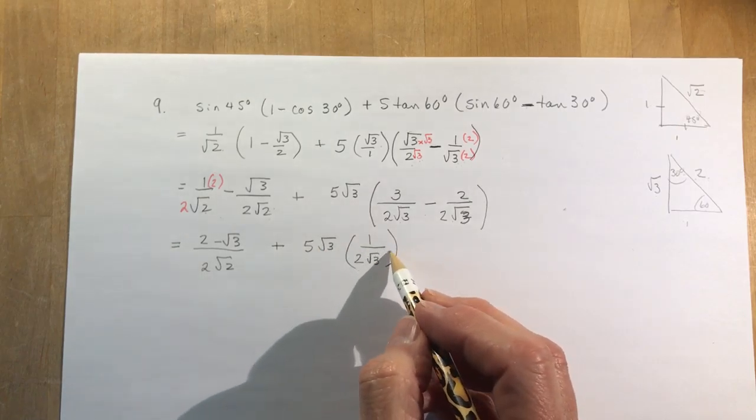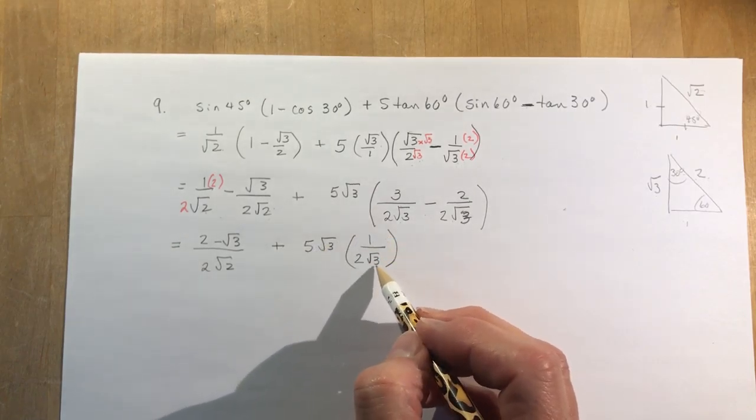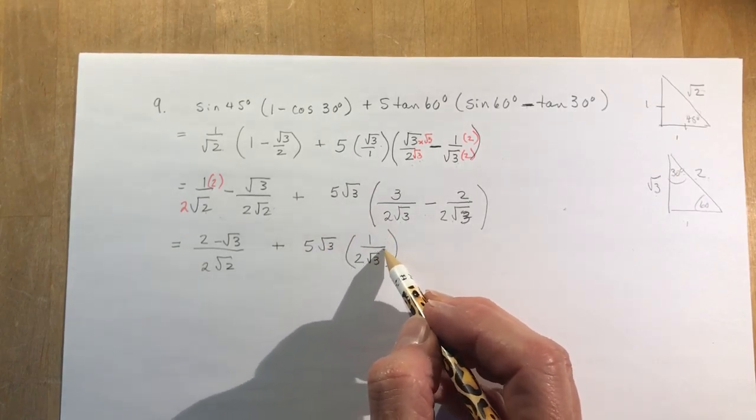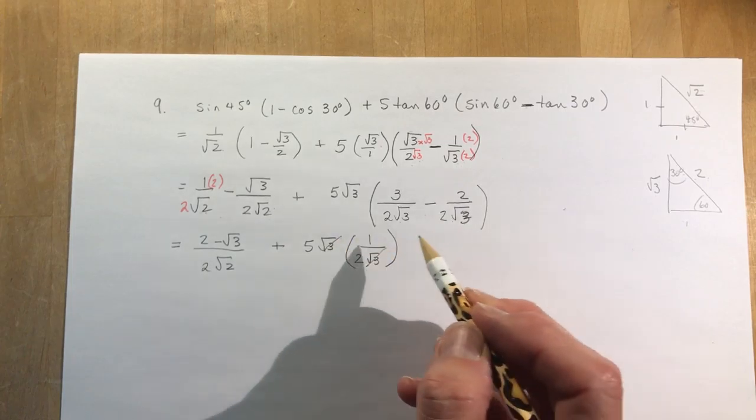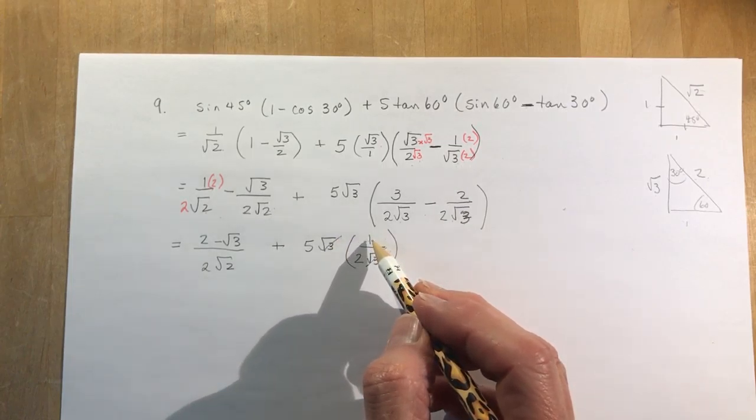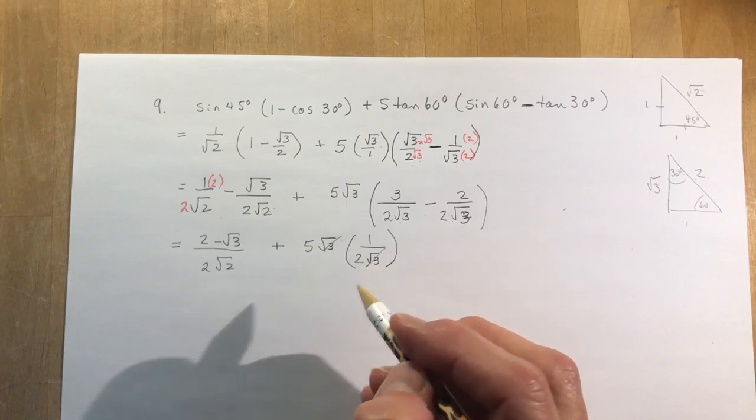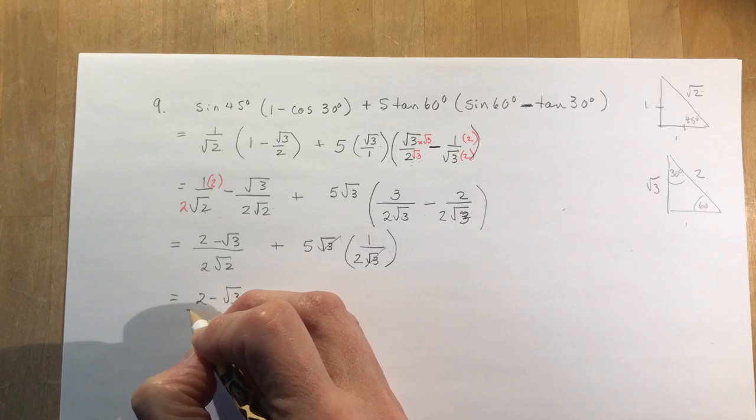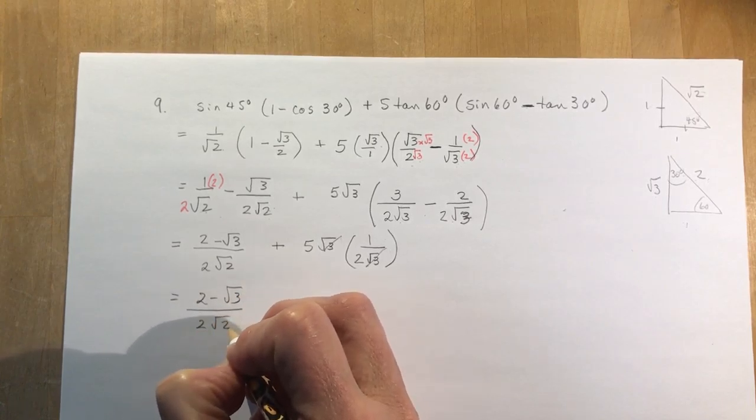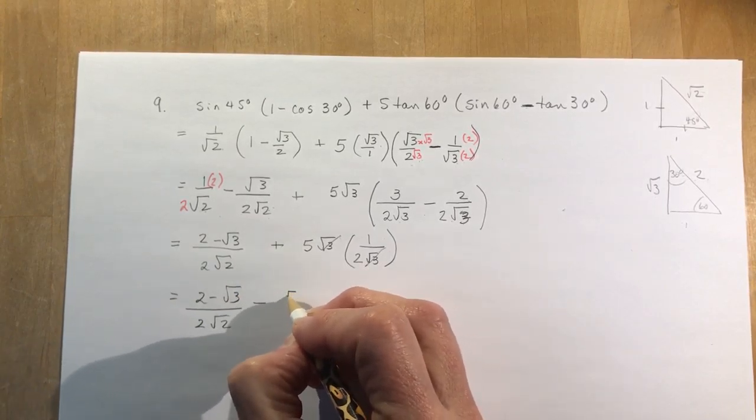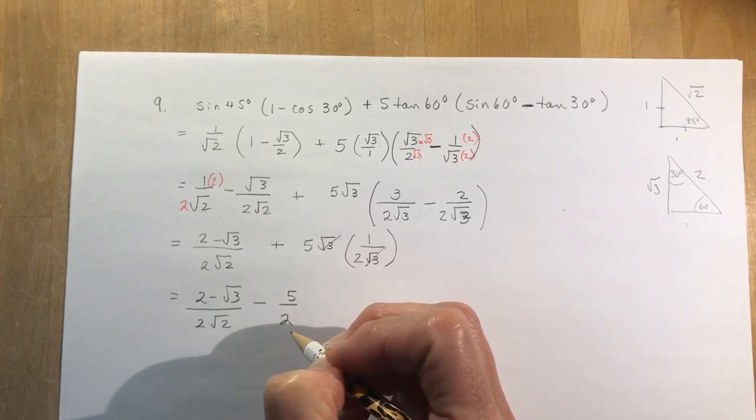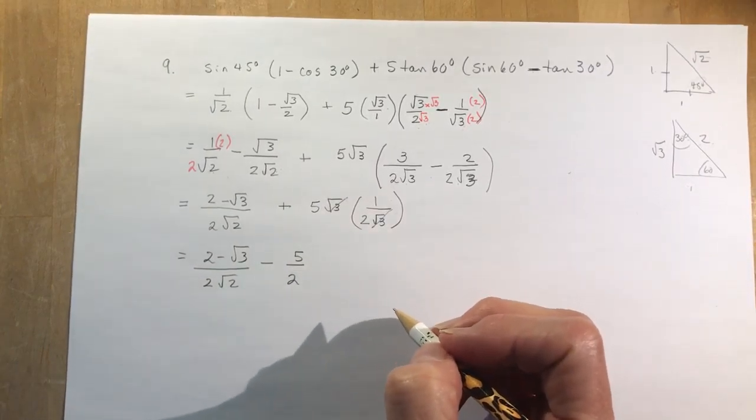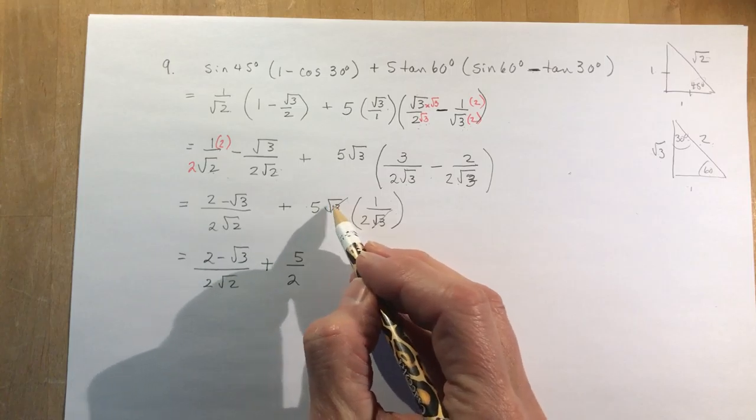And when I multiply these, you can see I would have 5 root 3 over 2 root 3, so these root 3s are going to cancel. And I get 5 over 2, so I have 2 minus root 3 over 2 root 2, and it was plus, plus 5 over 2.